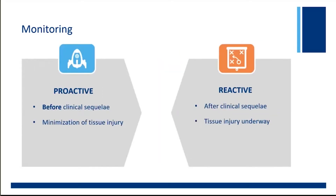Another way of thinking about our types of monitoring is monitoring that's proactive versus that which is reactive. Proactive monitoring is all the forms of monitoring we do as safety measures to prevent tissue injury or prevent diseases from taking place — a form of monitoring before clinical sequelae, with the goal of minimization of tissue injury. Contrast that with reactive monitoring, which is picking up the pieces after they've already fallen — giving a blood transfusion after anemia has already been discovered. This is after clinical sequelae have already occurred and tissue injury is underway.